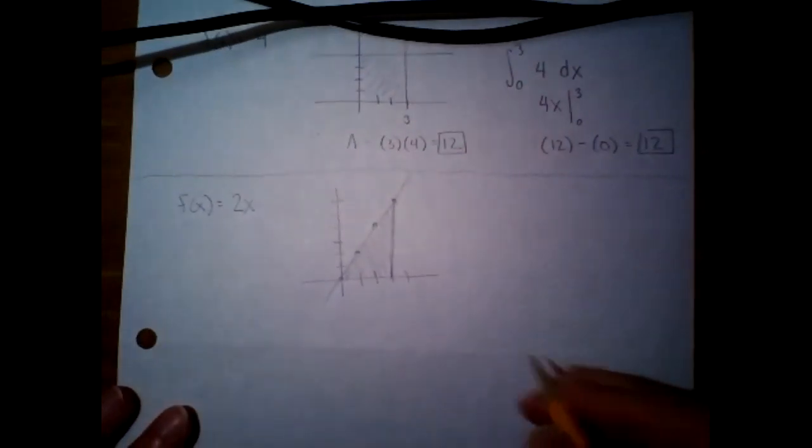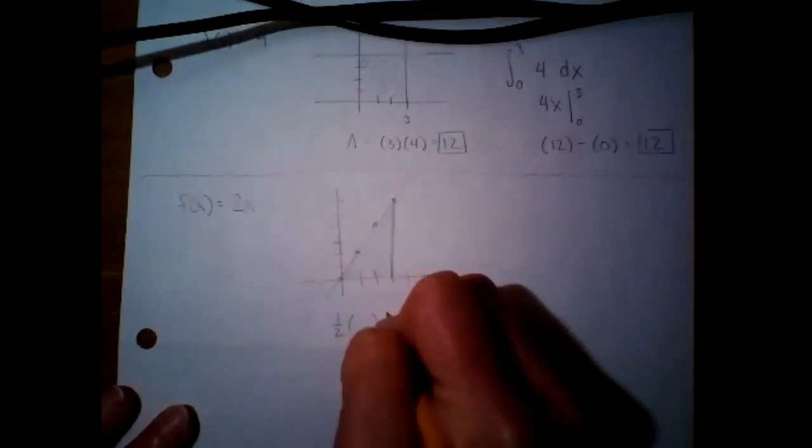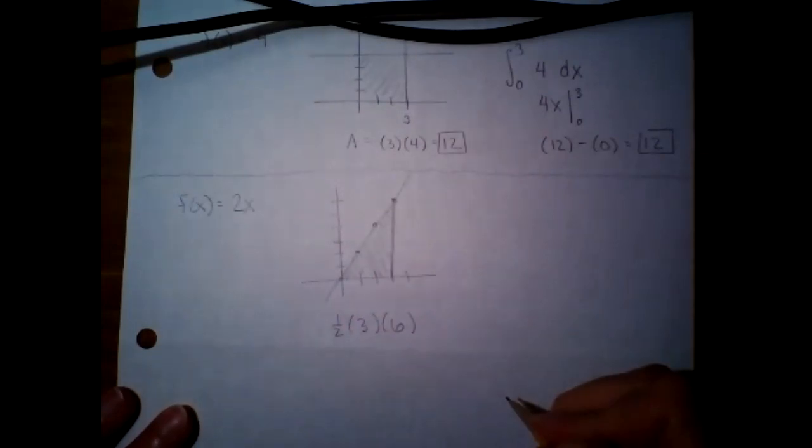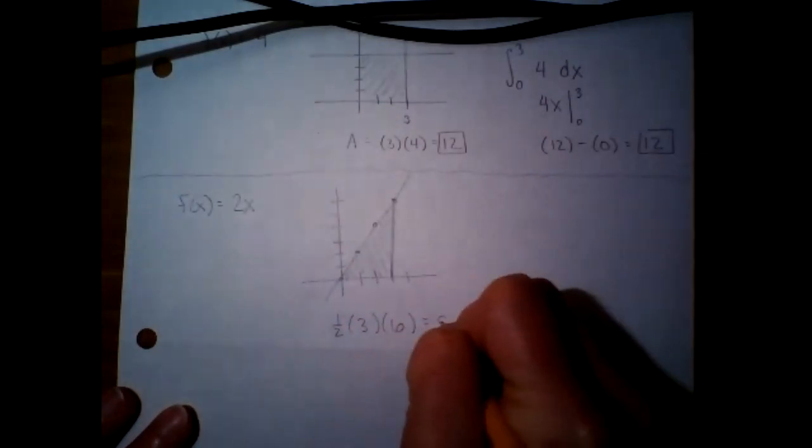All right. So if we're going to do geometry, this will be one half base times height. The base is three. The height is six. That is going to give us nine.